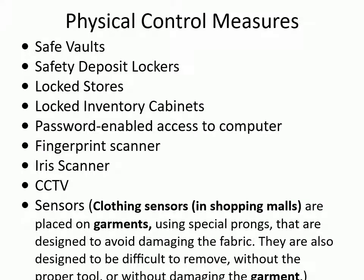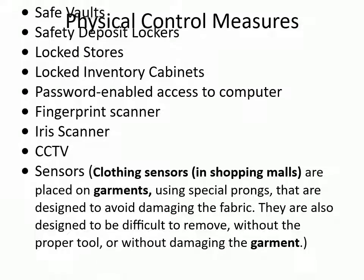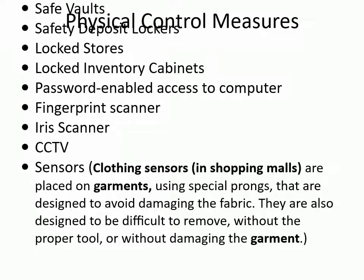Physical control measures include: safe vaults, safety deposit lockers, lock stores, locked inventory cabinets, password-enabled access to computers, fingerprint scanners, iris scanners, CCTV, and sensors. Clothing sensors in shopping malls are placed on garments using special prongs designed to avoid damaging the fabric, and they are designed to be difficult to remove without the proper tool or without damaging the garment.